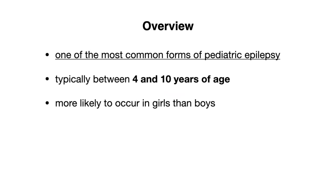Absence seizures are one of the most common forms of pediatric epilepsy, and they typically occur between 4 and 10 years of age. Epidemiologically, they are more likely to occur in girls than boys.